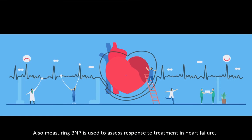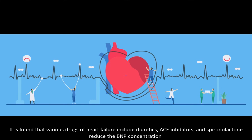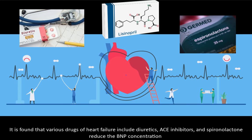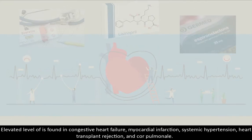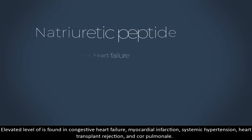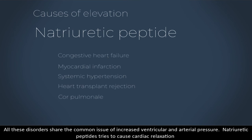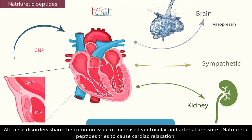Measuring BNP is also used to assess response to treatment in heart failure. It is found that various drugs used in heart failure, including diuretics, ACE inhibitors, and spironolactone, reduce the BNP concentration. Elevated levels are found in congestive heart failure, myocardial infarction, systemic hypertension, heart transplant rejection, and cor pulmonale. All these disorders share the common issue of increased ventricular and arterial pressure, and natriuretic peptides try to cause cardiac relaxation.